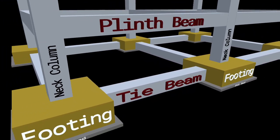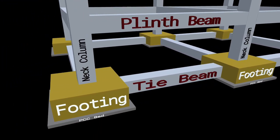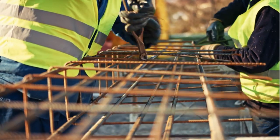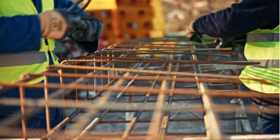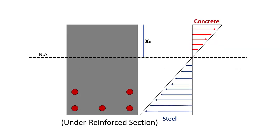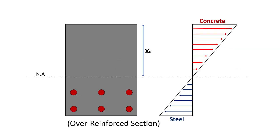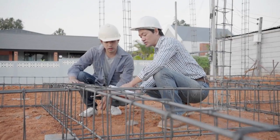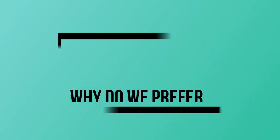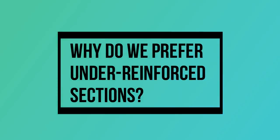When it comes to designing RCC beams, there are several options to consider regarding the amount of reinforcement used. Generally, we have three types of sections: balanced section, under reinforced section, and over reinforced section. In this lecture, I am going to explain all three sections in detail, and at the end, we will discuss why under reinforced sections are often preferred over balanced or over reinforced sections.